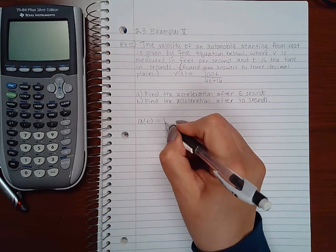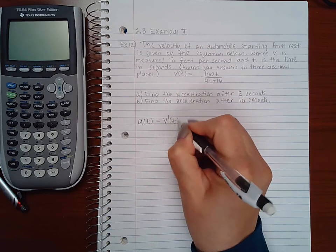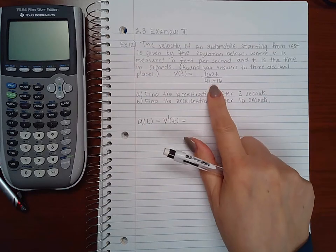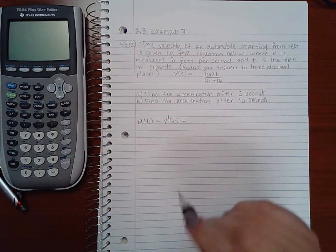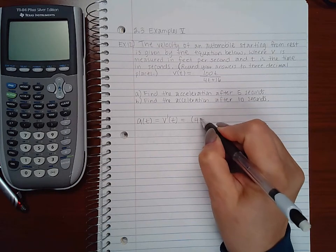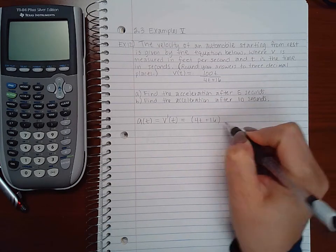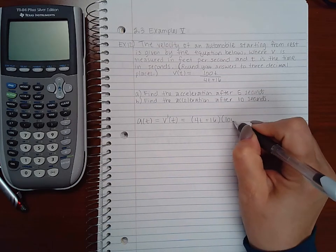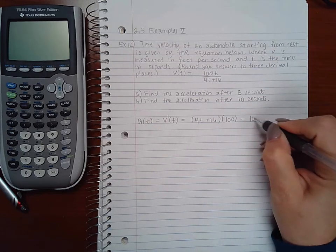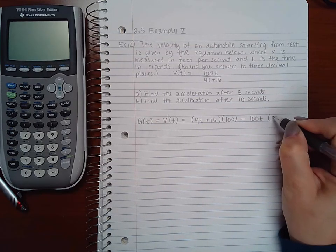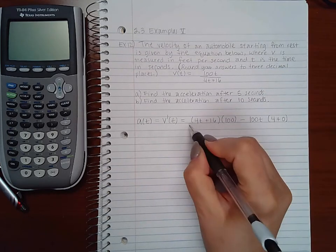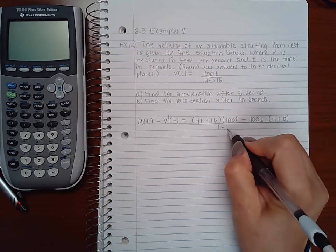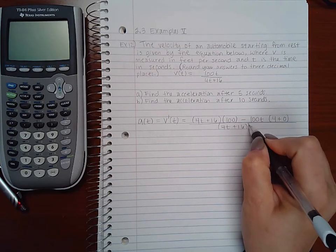A of t is found by taking the derivative of v of t. Since v of t consists of a fraction, I will use the quotient rule. So low d high minus high d low all over low squared.